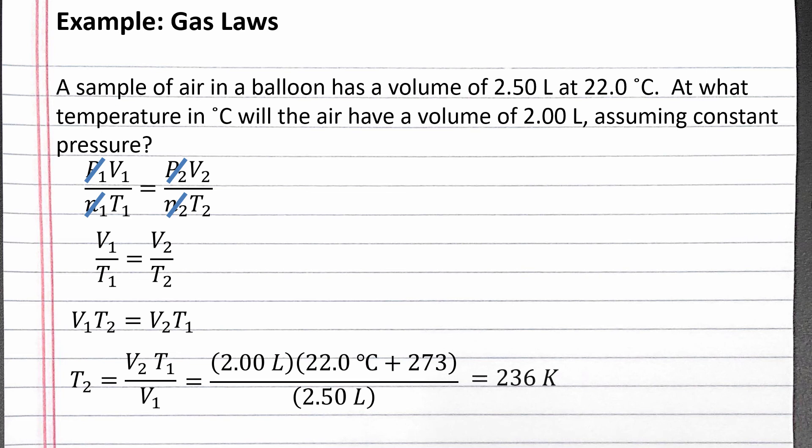Completing the calculation, we get 236, and our units for temperature for this equation are always Kelvin. But the problem asks for the temperature in degrees Celsius, so we need to convert back to degrees Celsius by subtracting 273. 236 Kelvin minus 273 is negative 37 degrees Celsius.